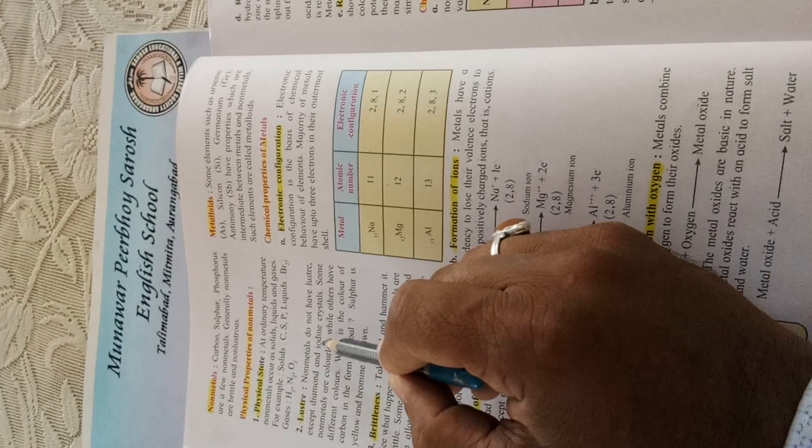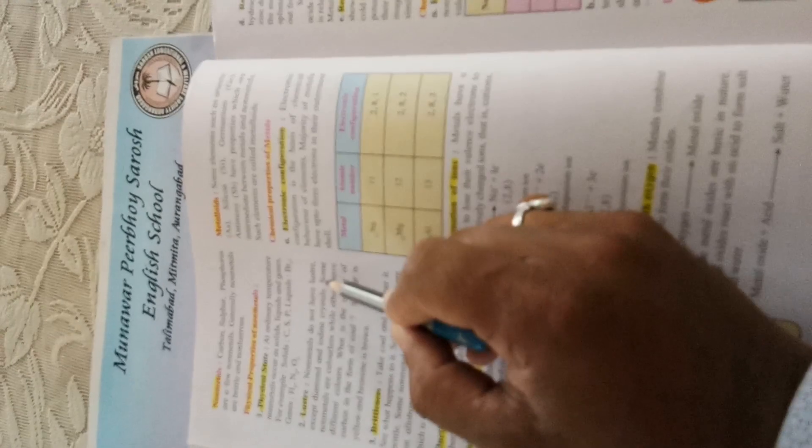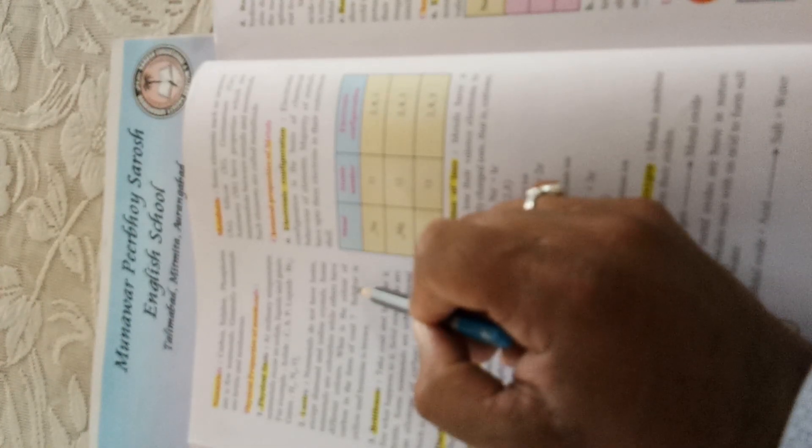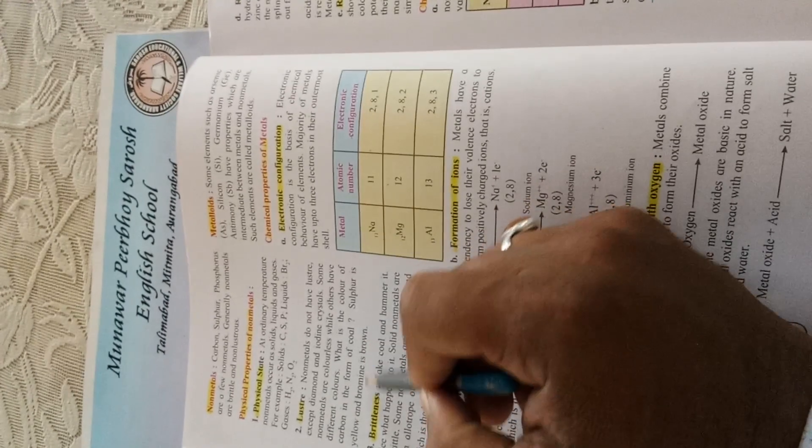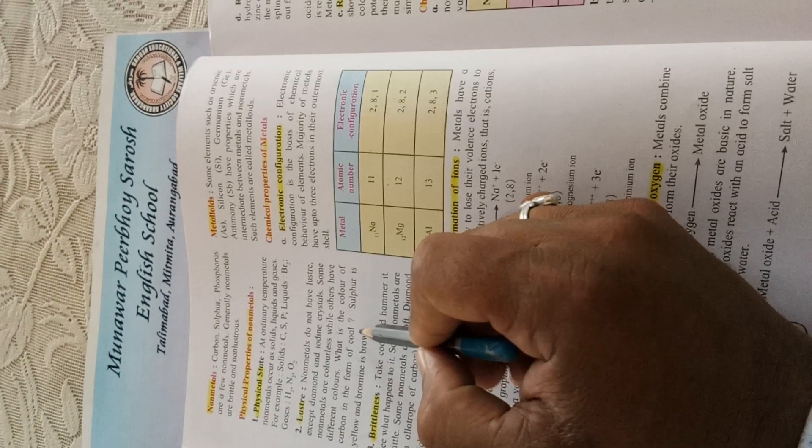Now the second property is lustre. Nonmetals do not have lustre, except diamond and iodine crystals. Some nonmetals are colorless, while others have different colors. Carbon in the form of coal is black, sulphur is yellow, and bromine is brown. Overall, nonmetals do not have lustre except diamond and iodine.